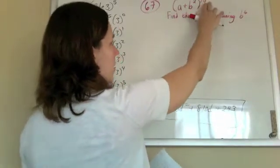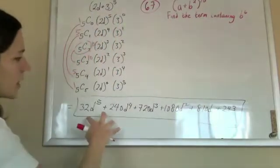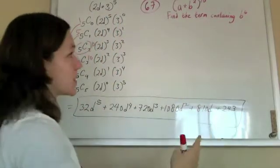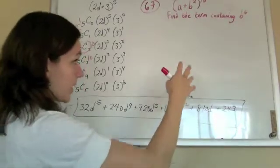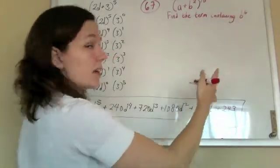Now we know we could write out this whole mess, right, and just find the term that has b to the 6. But we don't really want to do that. We want to narrow in on this particular term if we can to save us some time.